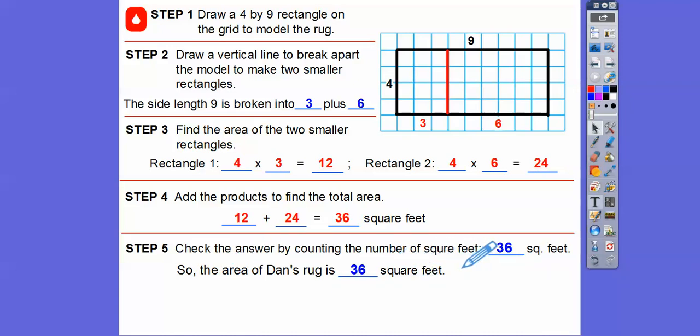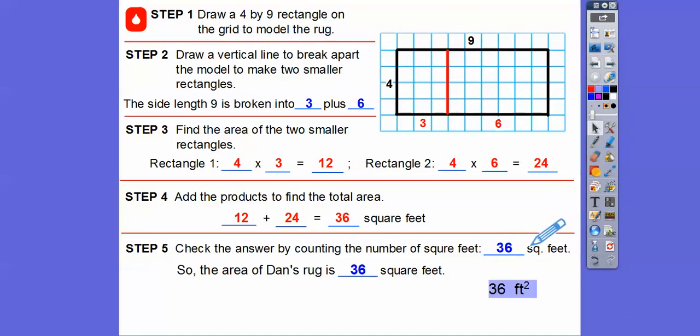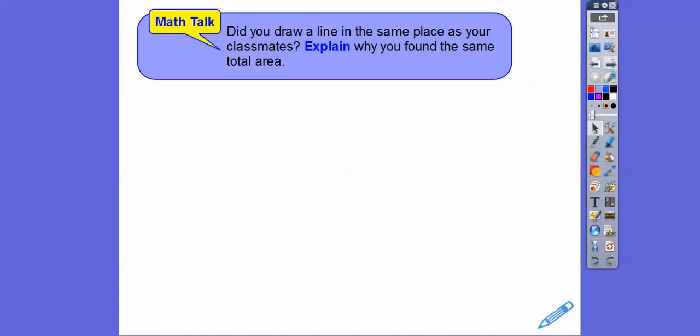Now later, when you get higher in mathematics, you probably write answers like this. 36, sorry about the font color right there. And then they would probably do feet squared. So that all says the same thing right there. So 36 square feet, this means square feet, just an abbreviation. 36 square feet or 36 feet squared. Either one is okay. And later when you get into higher math, you guys will write it that last way we just did.